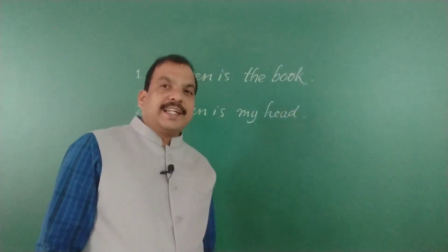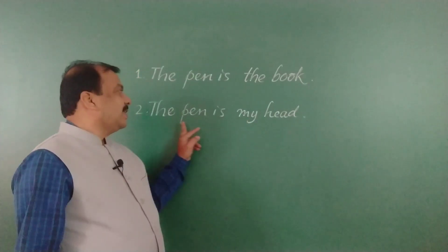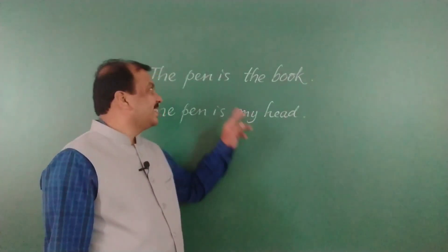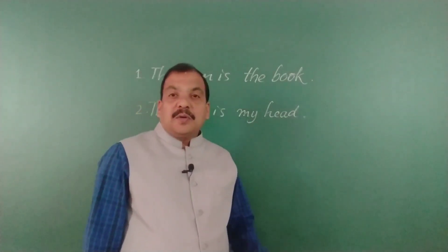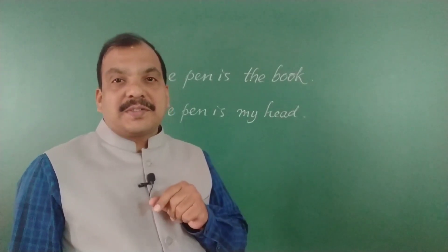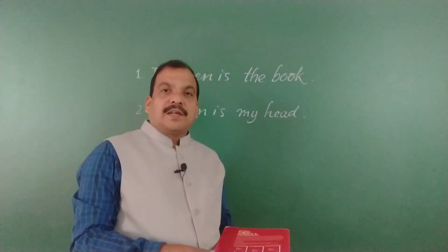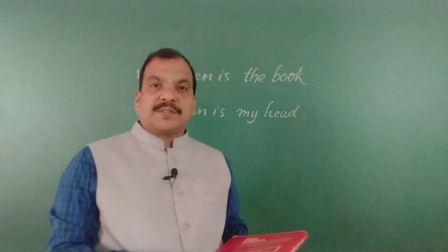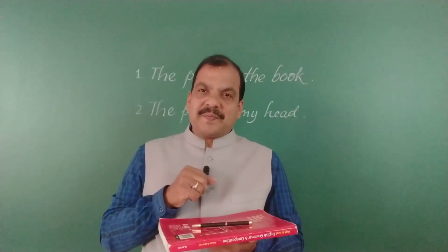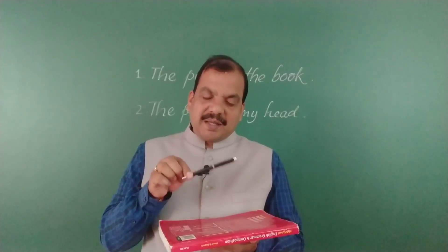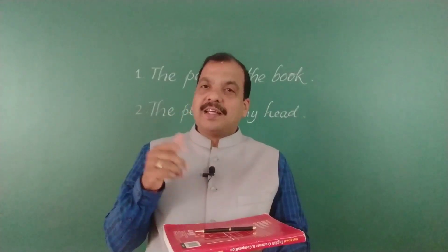Friends, please read these two sentences. In sentence number one you see: 'The pen is the book.' In sentence number two: 'The pen is my head.' How dangerous the meaning is because of the absence of some words! The sender wanted to tell you that the pen is on the book — the word 'on' is missing.